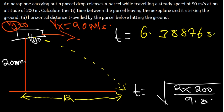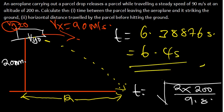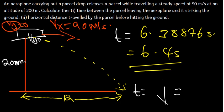Rounding off, we can say time is approximately 6.4 seconds. That is the answer for part 1. For part 2, we need to calculate the horizontal distance traveled by the parcel before hitting the ground — that is the range. So let's note our time as 6.4 seconds.